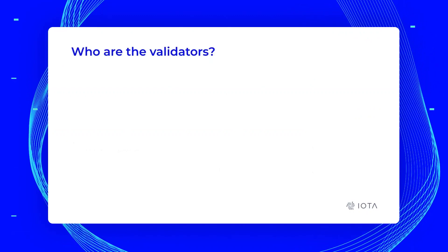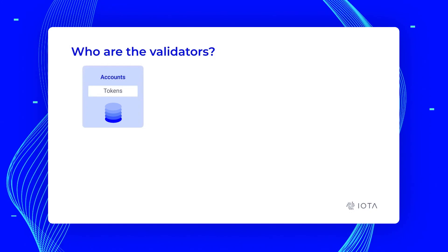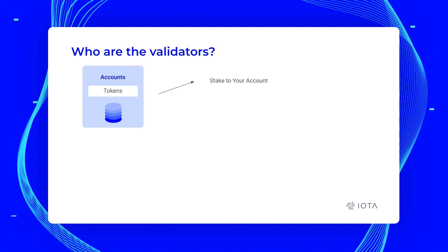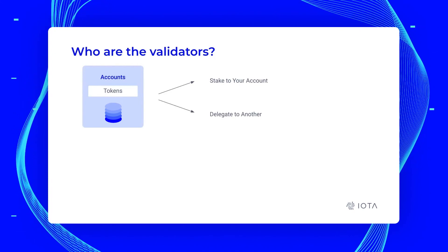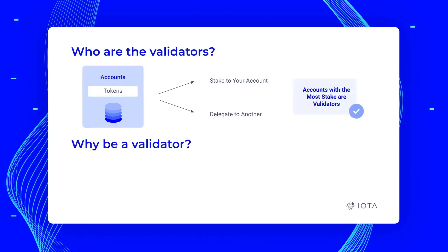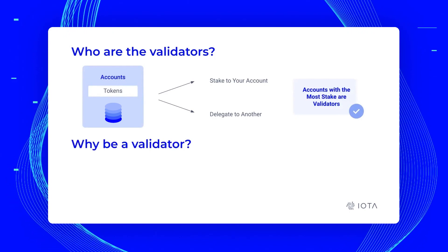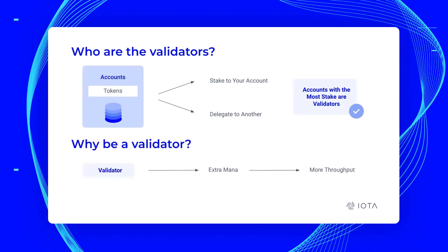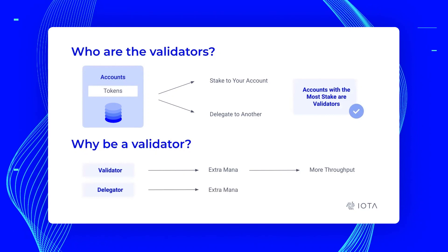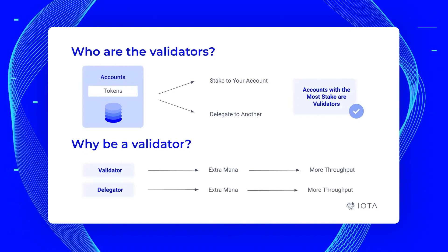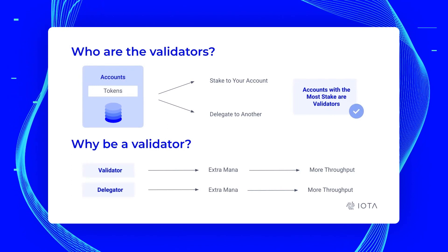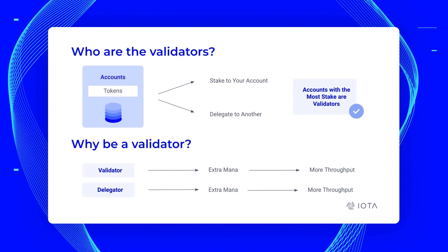Who are these validators? We have tokens that are locked to accounts, and every account holder — every user — has two choices: they can either stake these tokens to their account, or they can delegate their stake to another account. The accounts with the most stake are the validators. Why should you be a validator? Validators get extra mana, which you can then use for more throughput. Why would you be a delegator? You get extra mana and more throughput as well — not quite as much as the validator, but you still get a reward. So users are highly motivated to delegate and thereby contribute to the security of the network.